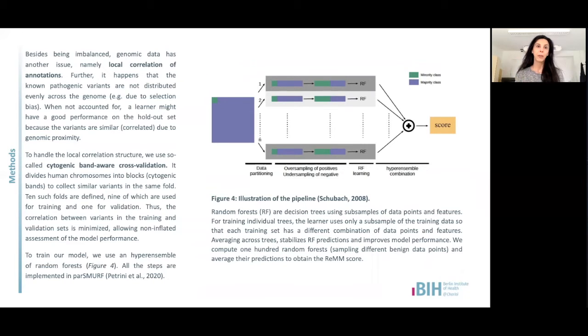At the same time, variants that lie close to each other have similar or correlated annotations. And this combination of the selection bias on one hand and the local correlation structure of annotations on the other hand is problematic for machine learning tasks, because a learner can again achieve high accuracy even on a holdout set if the holdout set contains variants genomically proximal to those in the training set.